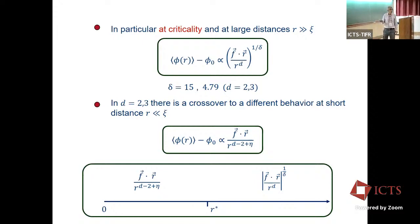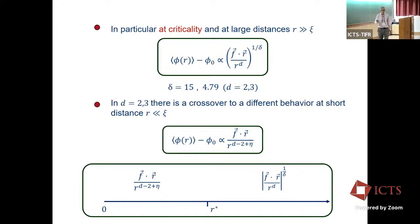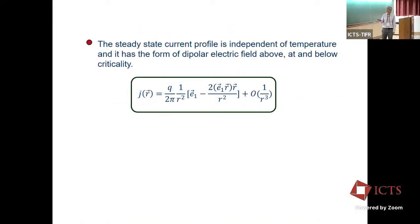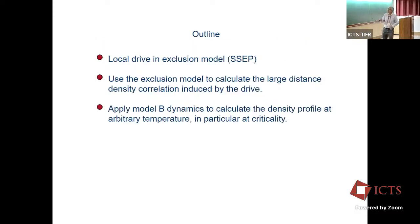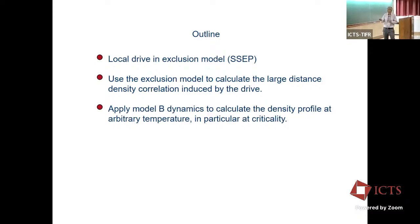The two-point correlation depends on both r and s because you break translational invariance — there is a pump somewhere so it's not a function of r minus s. The current takes the form of an electric field in d dimensions. The outline is: first, local drive in the exclusion model — work done with Satya and Deepak — where we calculate the correlation function; then the second part looks at the fluid at general temperature and at criticality.